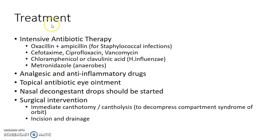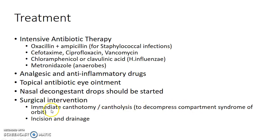How do you treat a case of orbital cellulitis? Intensive antibiotic therapy should be started. Oxacillin plus ampicillin should be given for staphylococcal infections, and can be replaced with cefotaxime, ciprofloxacin, or vancomycin. Chloramphenicol or clavulanic acid should be added to cover Haemophilus influenzae, and metronidazole to cover anaerobes. Analgesic and anti-inflammatory drugs can be given to relieve symptoms, along with topical antibiotic eye ointment and nasal decongestant drops. Surgical intervention includes immediate canthotomy or cantholysis to decompress compartment syndrome of the orbit, and incision and drainage of abscesses.